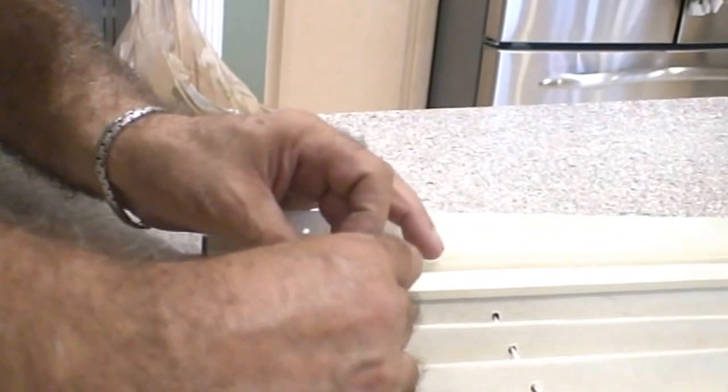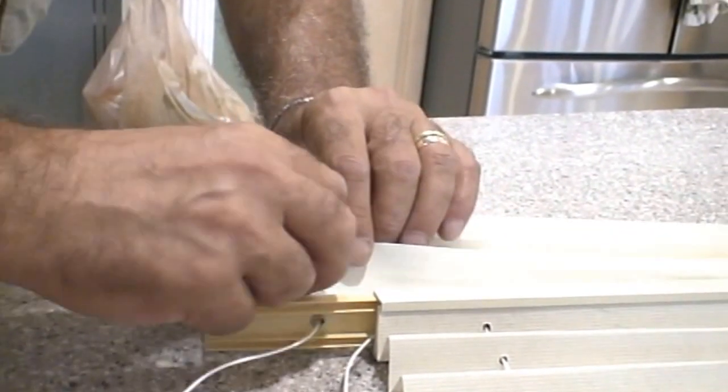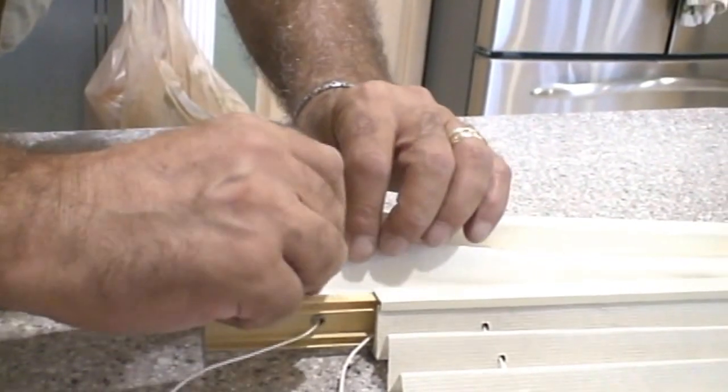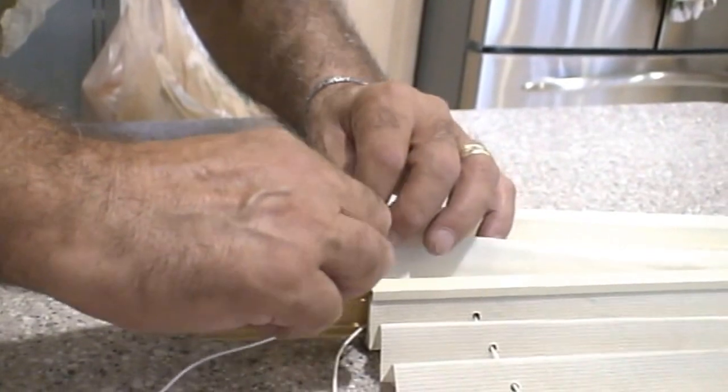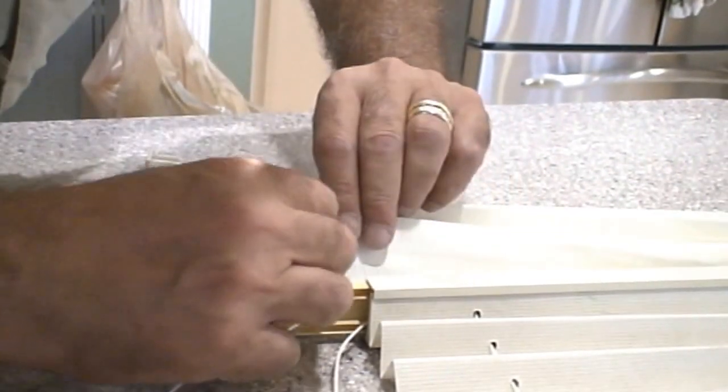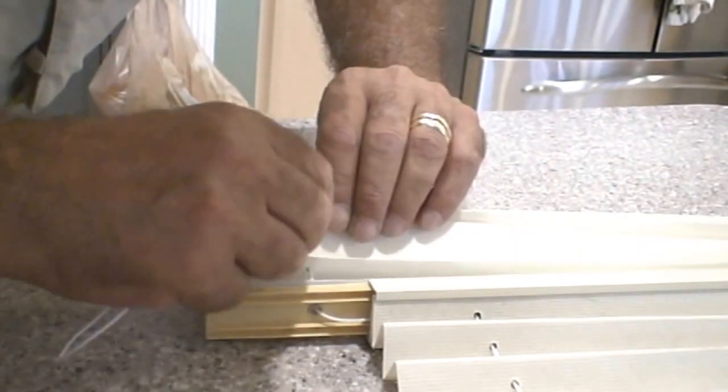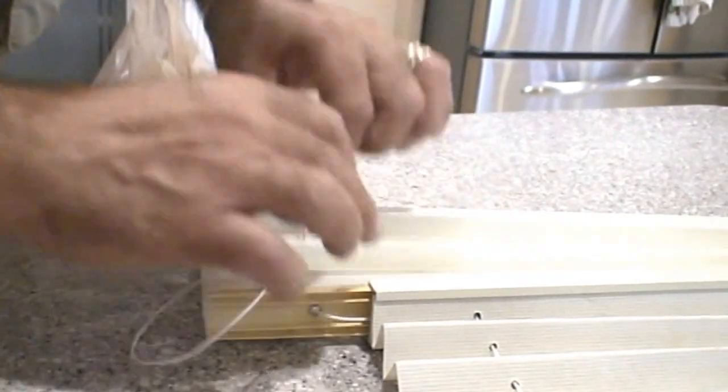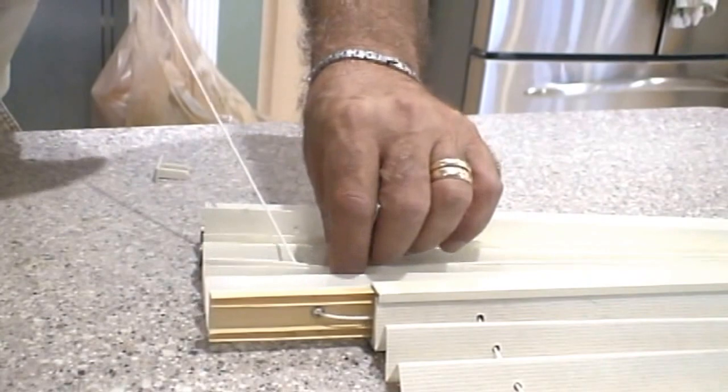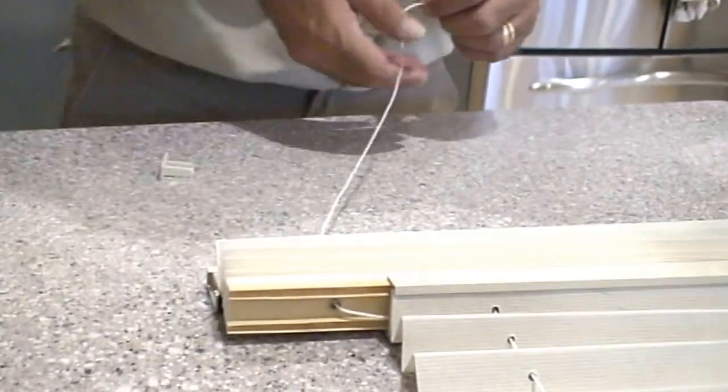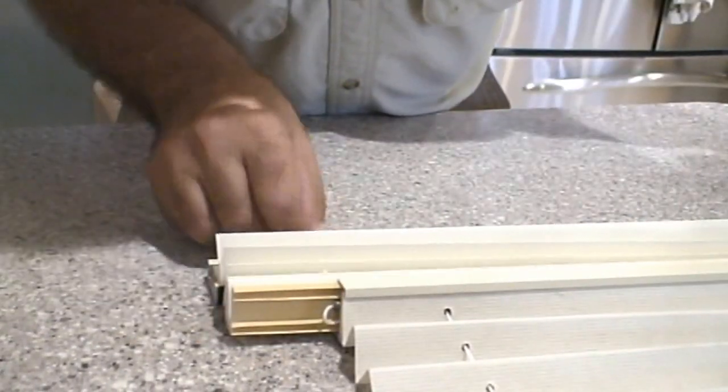Okay, before we finish sliding it all the way in, we want to make sure we thread the string right through the bottom of the track and into the pleats. So it goes to the very last track. You put it through every single hole and we'll be fine.